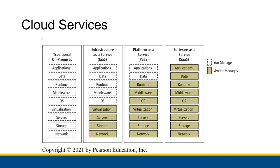For cloud services, the traditional on-premises is when you're actually building up your own server. You're setting up the network, the storage, the servers, figuring out the server virtualization, creating virtual servers within your servers to allocate different resources for different people throughout your organization. You're setting up the operating system on those virtual servers, setting up the middleware and runtime that people need to work with those servers, and then managing all of the data and applications stored on your servers.